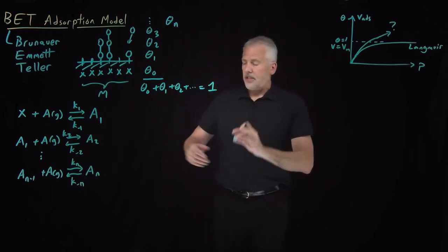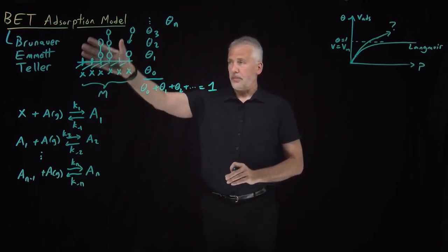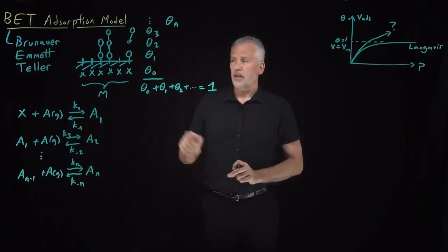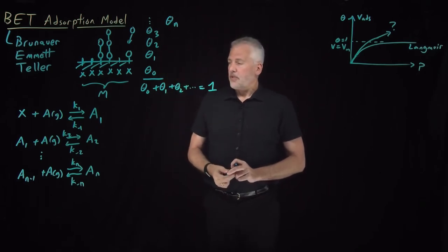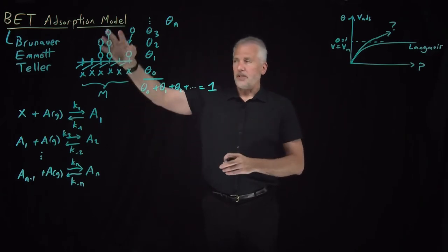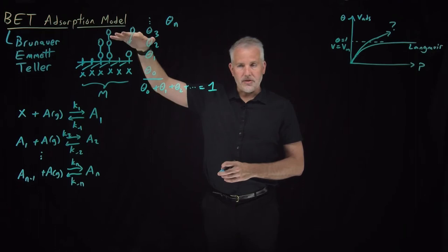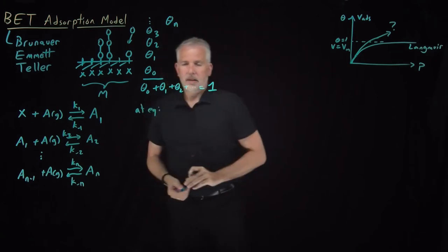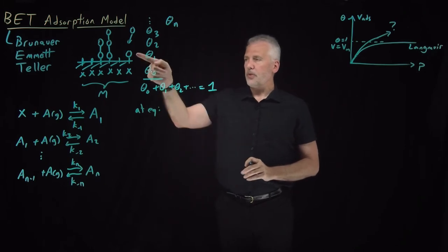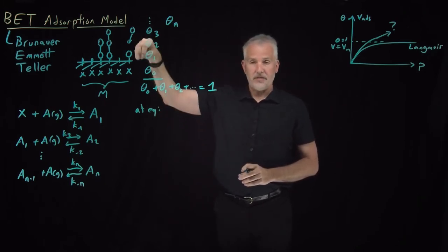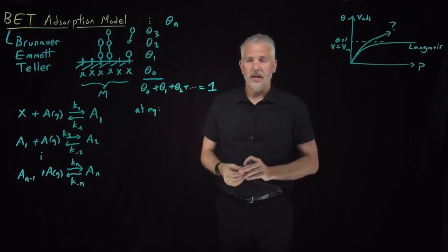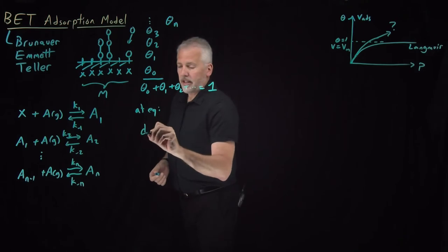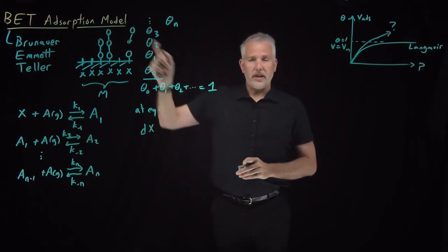That sets up our model. The next step is to ask what happens at equilibrium. If we've reached equilibrium, the number of molecules in the first layer is not changing — the rate of addition and the rate of disappearance must sum to zero. We can do that for molecules in any layer. The easiest one to consider first is the rate of appearance or disappearance of empty surface sites X.